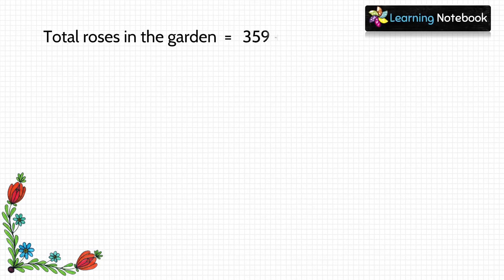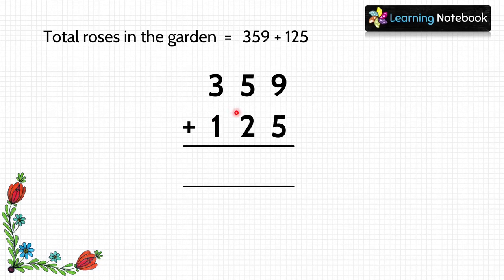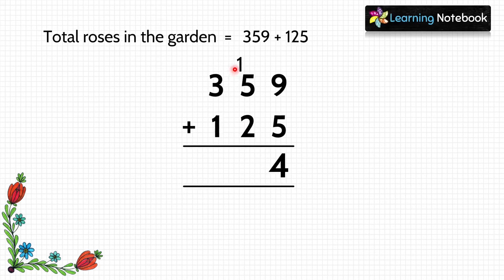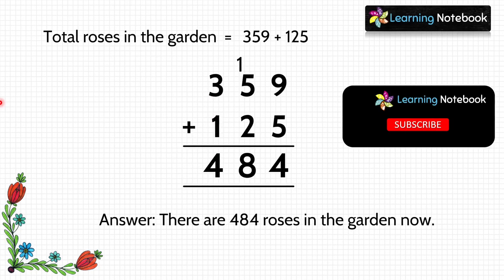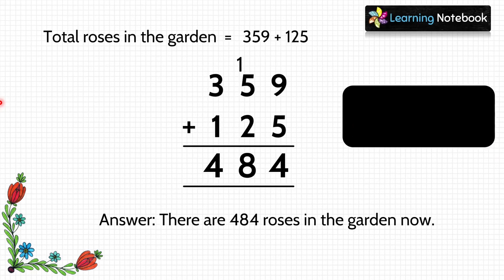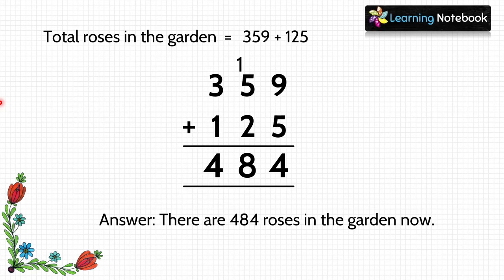Now the gardener plants 125 more roses, so total roses in the garden = 359 plus 125. Adding from ones place: 9 plus 5 equals 14 — write 4, carry 1. At tens place: 1 carry plus 5 plus 2 equals 8. At hundreds place: 3 plus 1 equals 4. Answer is 484. There are 484 roses in the garden now.